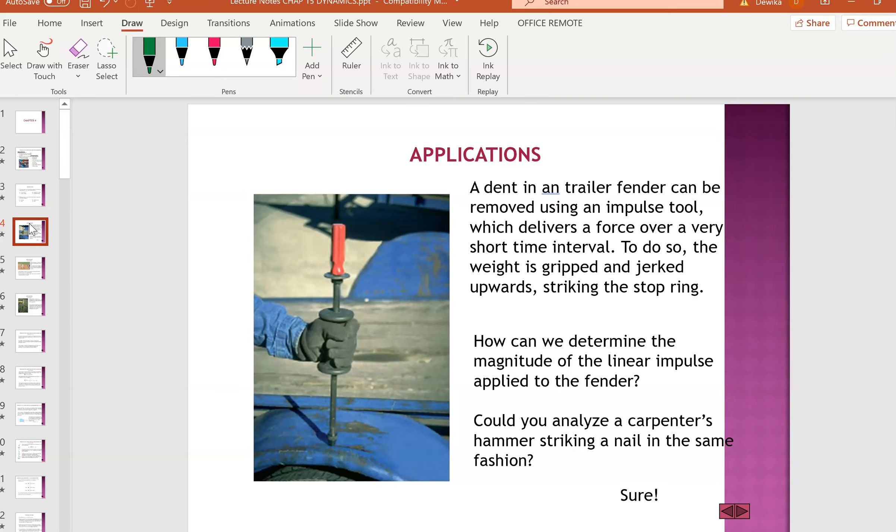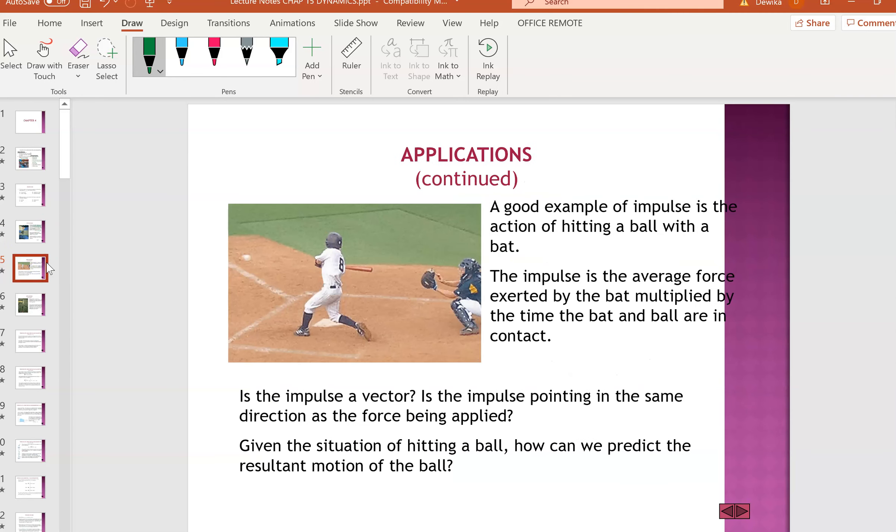Applications - this has got a lot of applications and mostly involves accidents or impact. For example, a dent in a trailer fender can be removed using an impulse tool which delivers a force over a very short time interval. To do so, the weight is gripped and jerked upward, striking the stop ring. This device uses impact. A good example of impulse is the action of hitting a ball with a bat. The impulse is the average force exerted by the bat multiplied by the time of contact. These are the questions we are going to solve in this chapter.